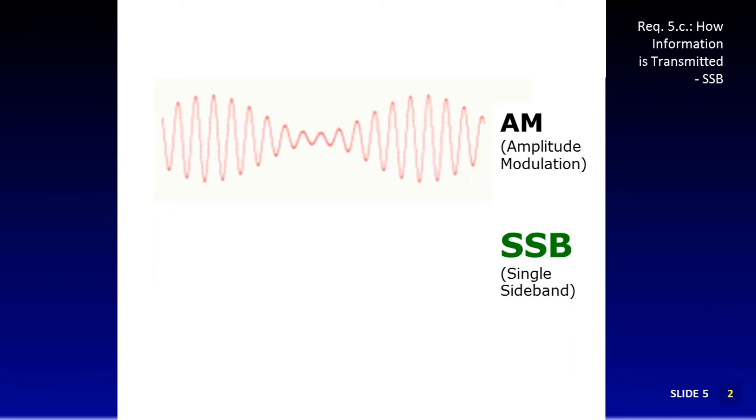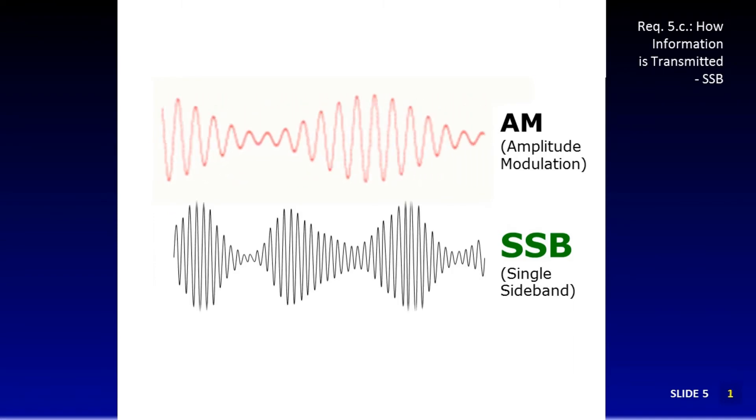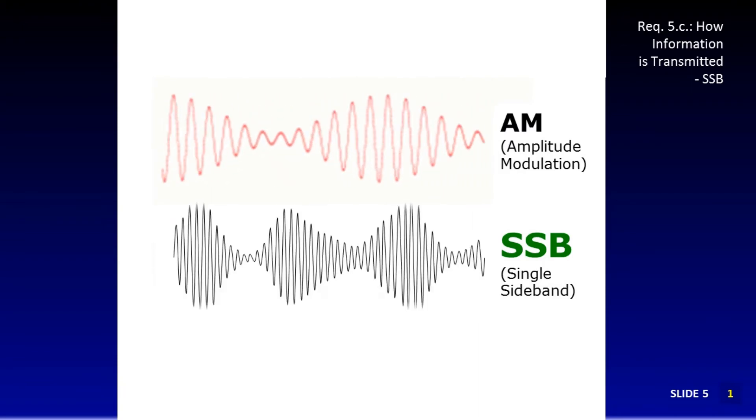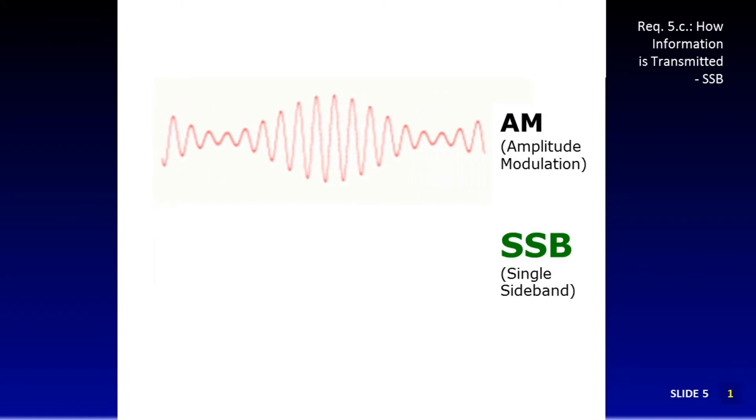In the AM signal above, there is always a carrier transmitted, even when no one is talking. Once you start talking in an AM transmitter, the carrier is then modulated as shown. But in a single sideband transmission, nothing happens on the airwaves unless you talk.